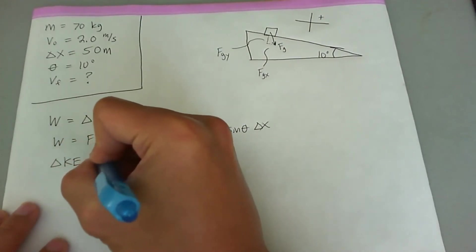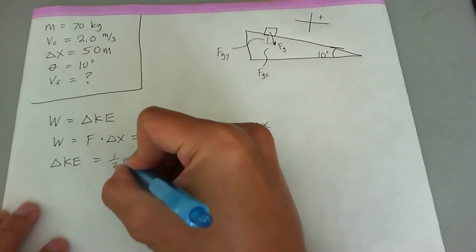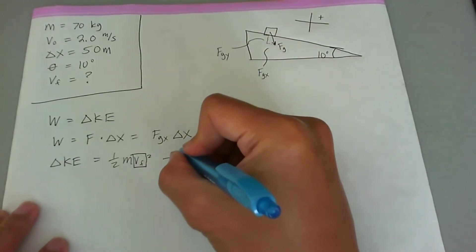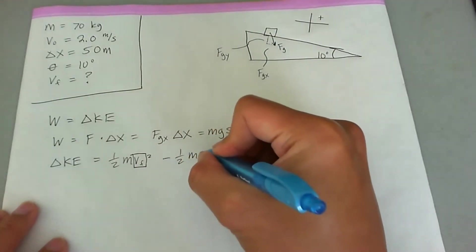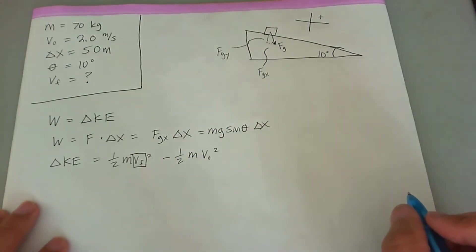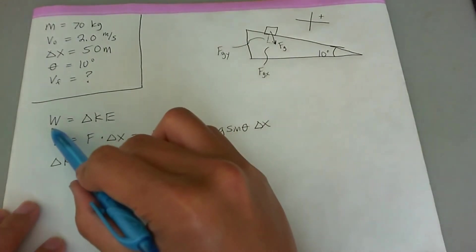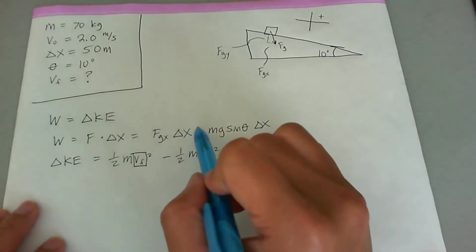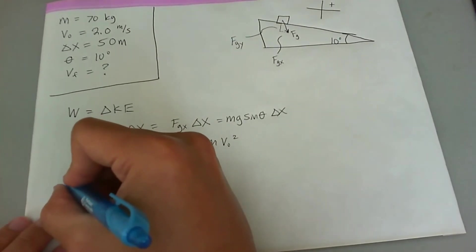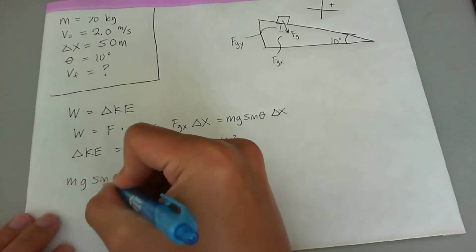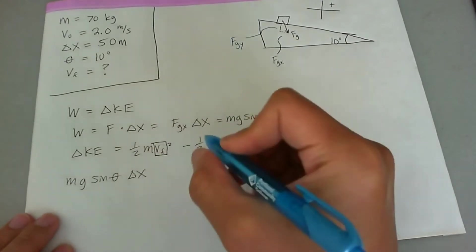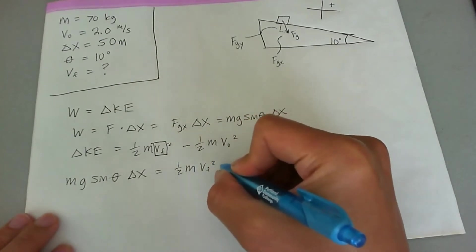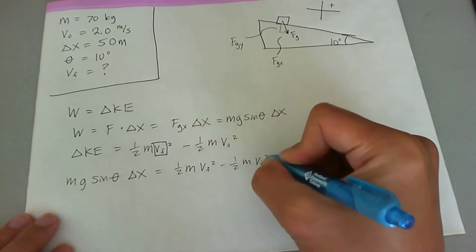Delta KE is the change in kinetic energy, which is what we're trying to find — it equals one-half m vf squared minus one-half m v-naught squared. Since W equals delta KE, we can set mg sine theta times delta x equal to one-half m vf squared minus one-half m v-naught squared.